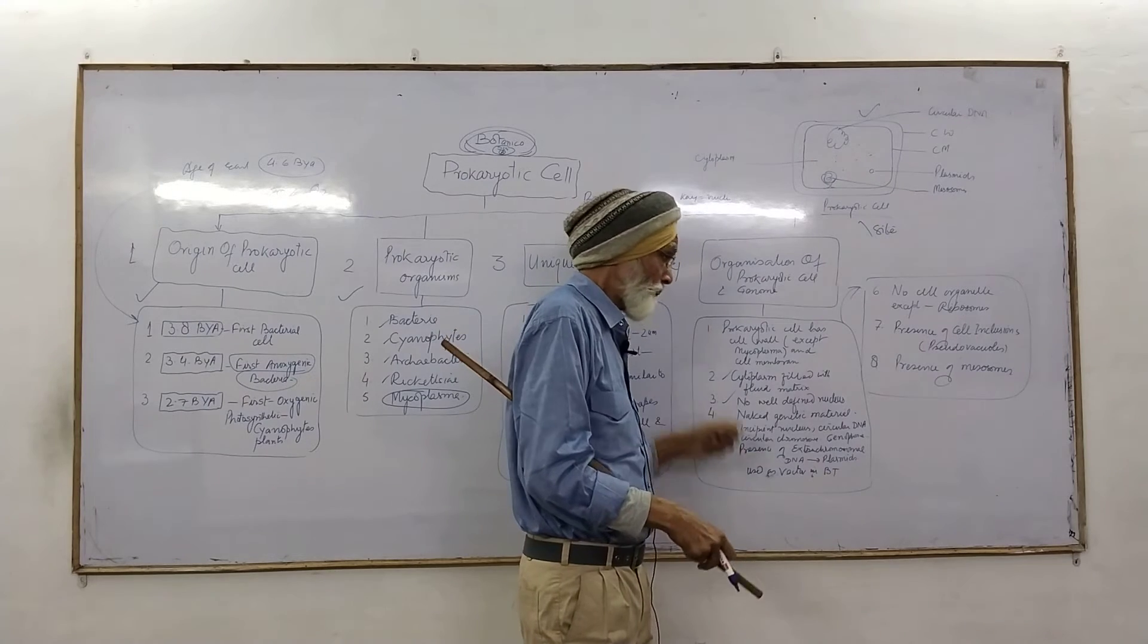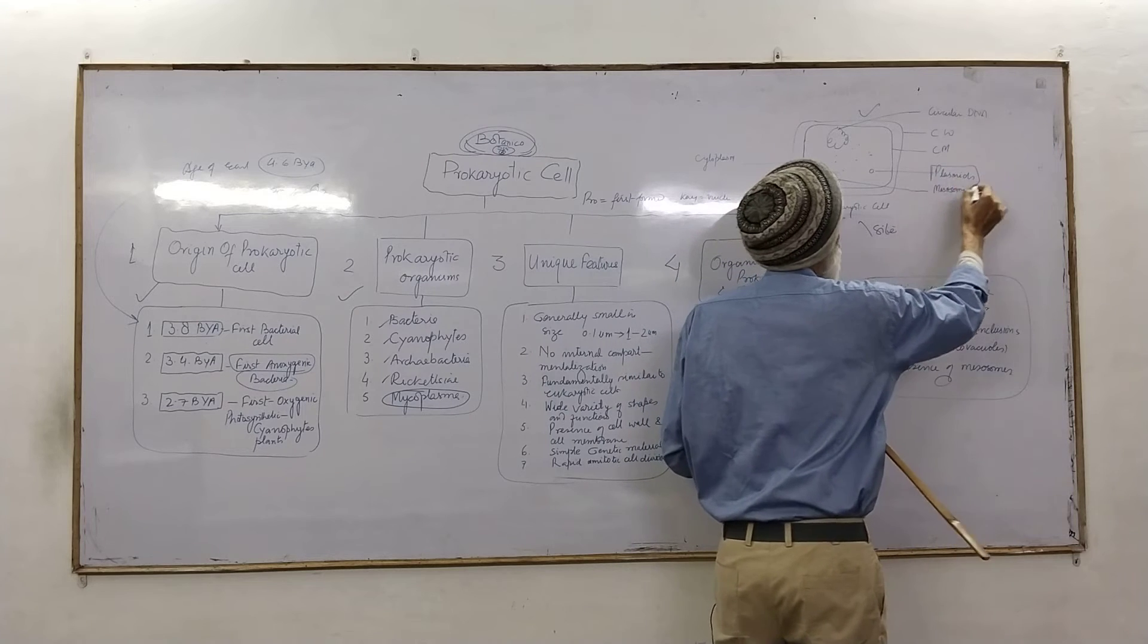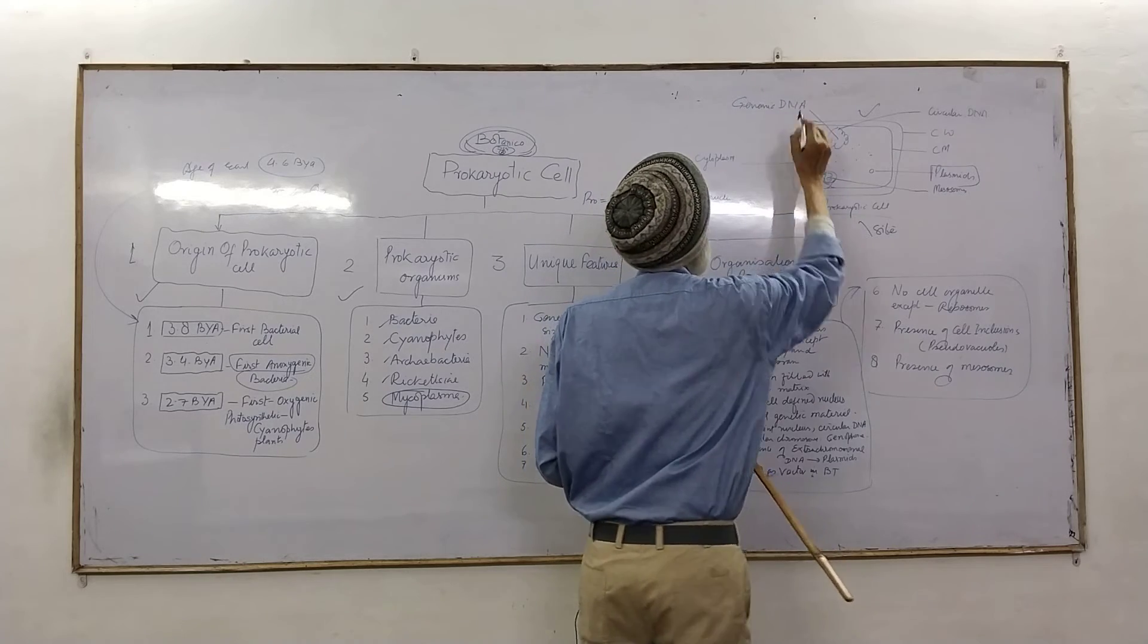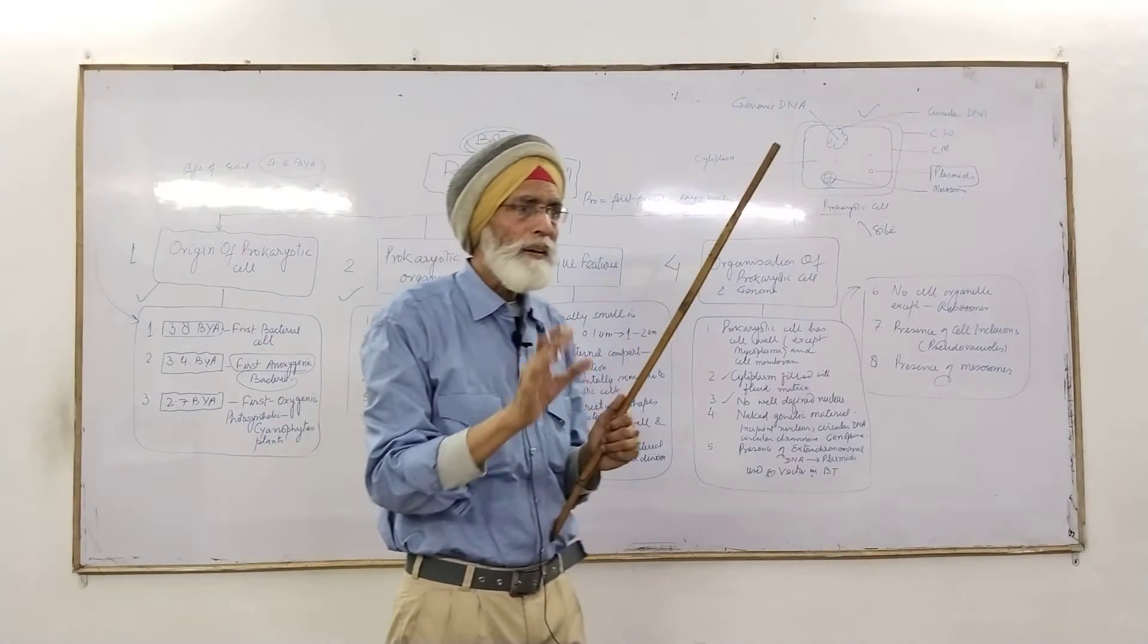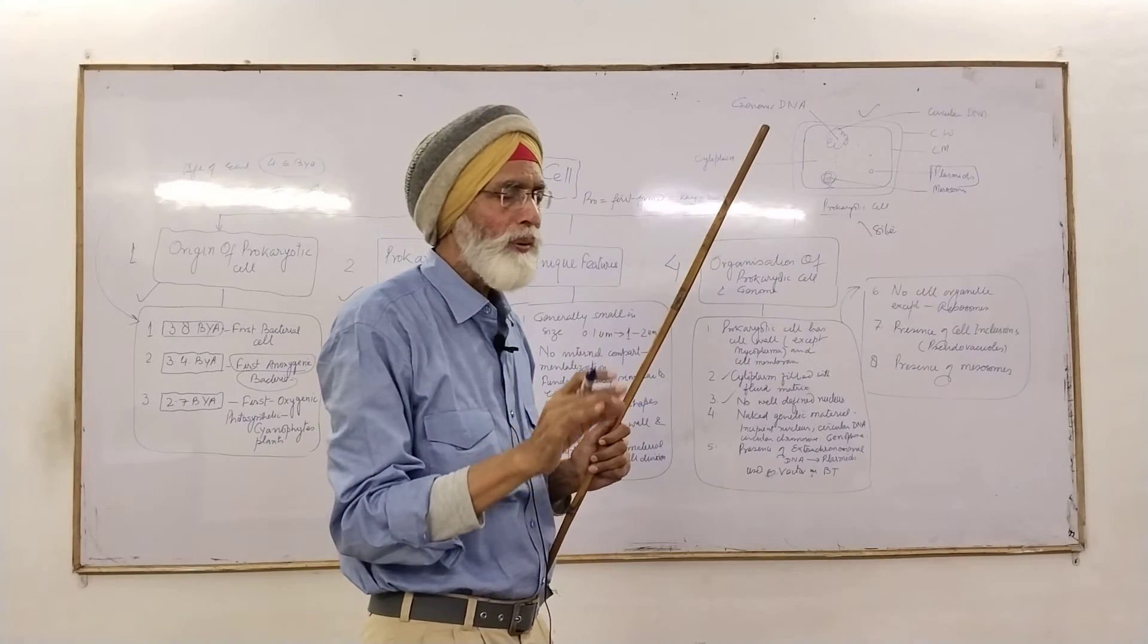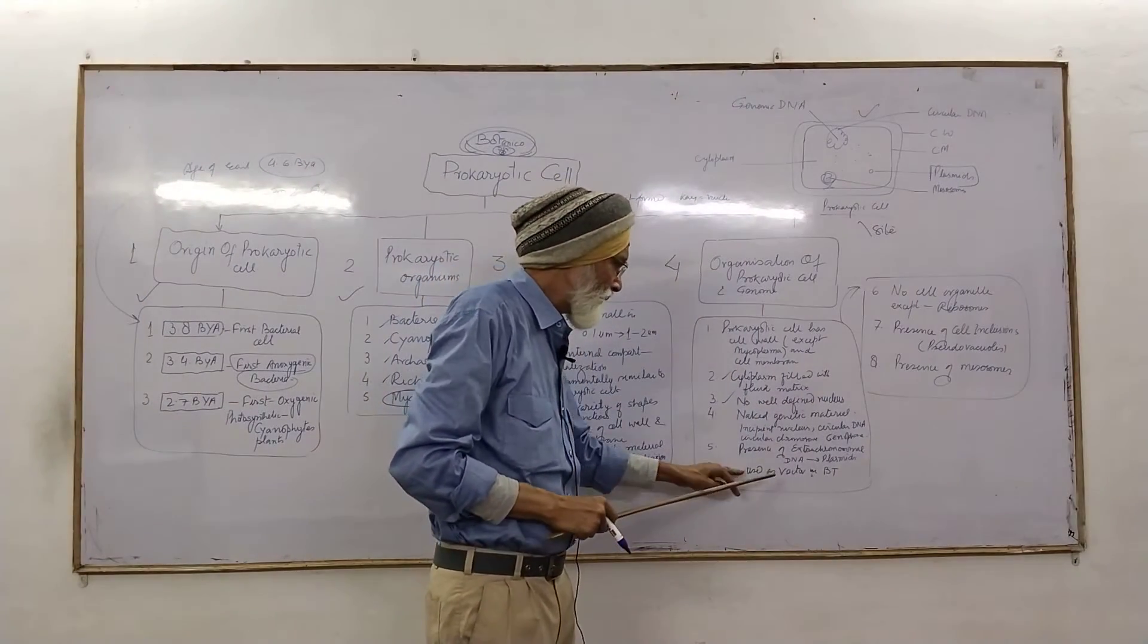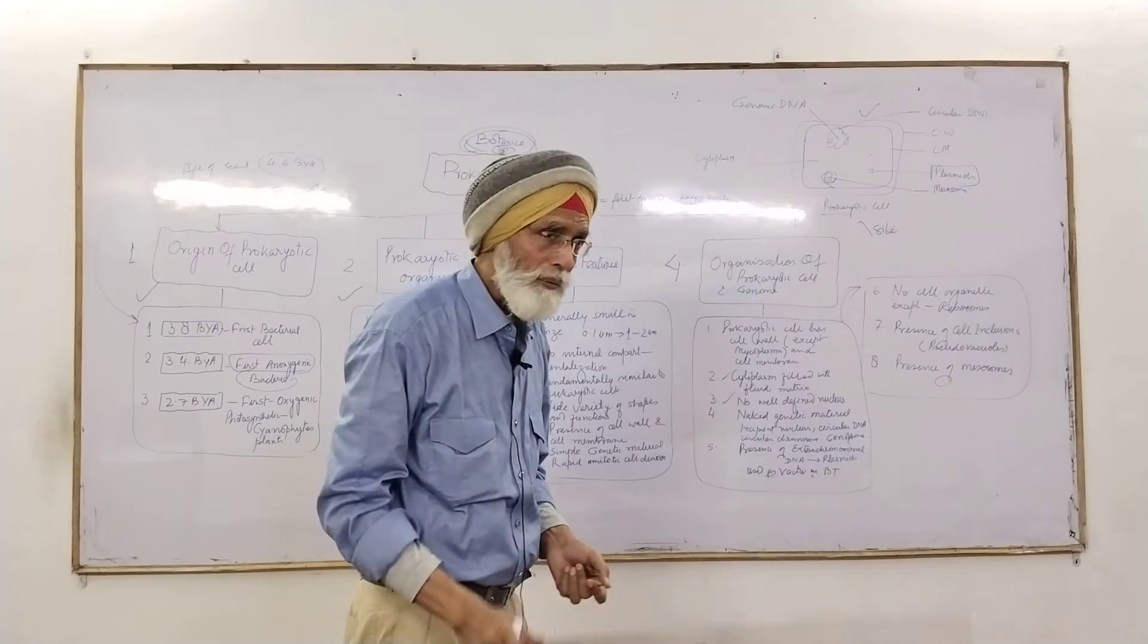Presence of extra-chromosomal cells, a very, very small gene other than. This is also called as genomic DNA, or genetic DNA. Other than genomic DNA, there are large number of self-replicating circular DNA molecule. And they have a very little few genes for particular specific functions. And these plasmids are also used as a vector in biotechnology.